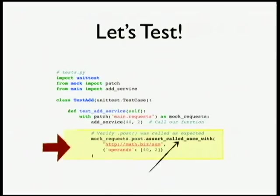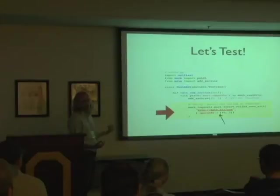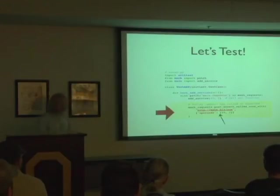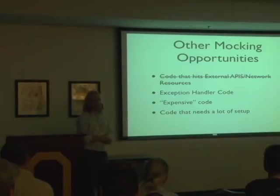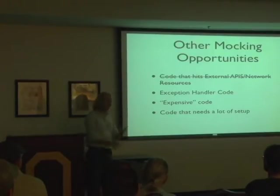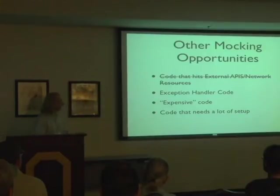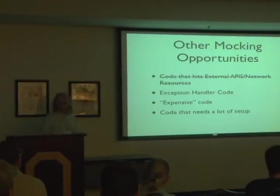In my code, I call request.post and pass it a URL and a dictionary of data. So I'm asserting that the mock requests module was called with the post function or method, and I'm asserting that it was only called one time and that it had these parameters. If the code that I'm testing ever changes any of this, this test would suddenly begin to fail.